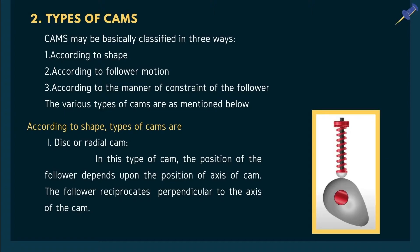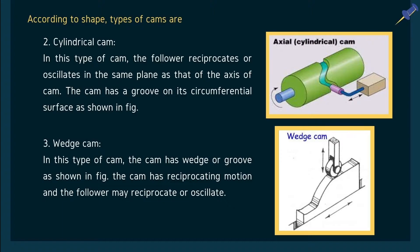According to shape, there are three types. First is the disc or radial CAM: the position of the follower depends on the position of the axis of the CAM, and the follower reciprocates perpendicular to the CAM axis. Second is the cylindrical CAM: the follower reciprocates or oscillates in the same plane as the axis of the CAM, and the CAM has a groove on its circumferential surface. Third is the wedge CAM: the CAM has a wedge or groove, moves with reciprocating motion, and the follower may reciprocate or oscillate.